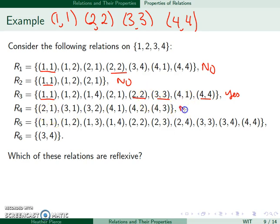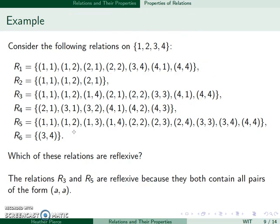The next one, no, doesn't have any of the double points. R5 has 1,1, 2,2, 3,3, and 4,4. So it is. And we can see R6 is missing these points. So we have that R3 and R5 are both reflexive.